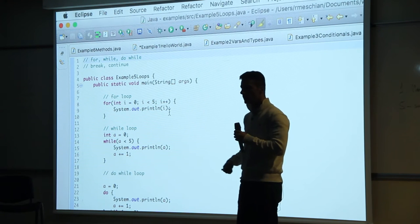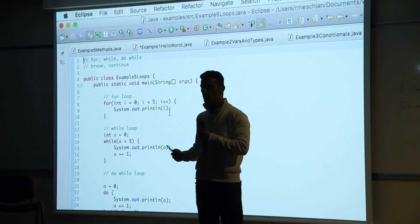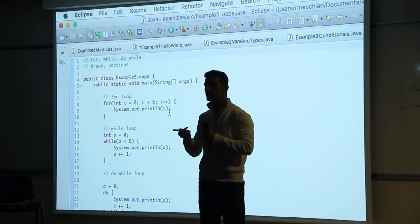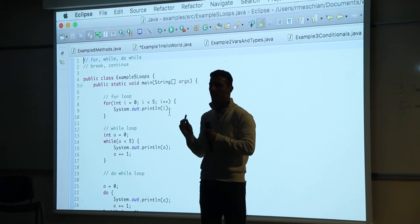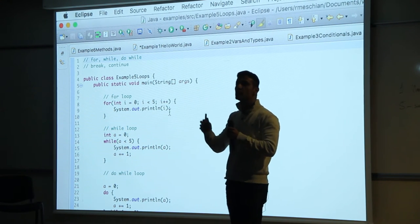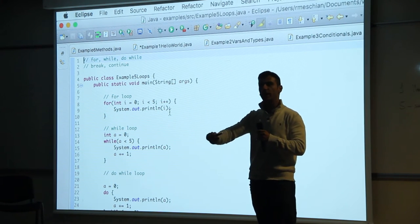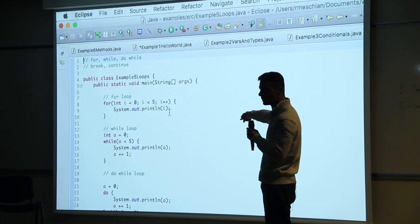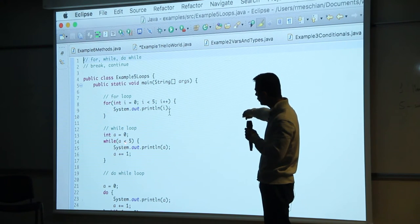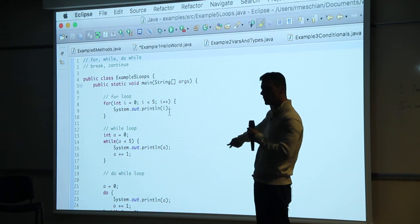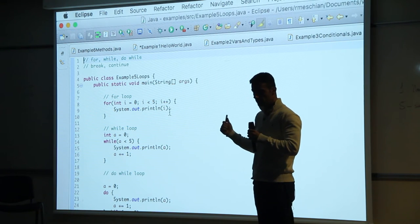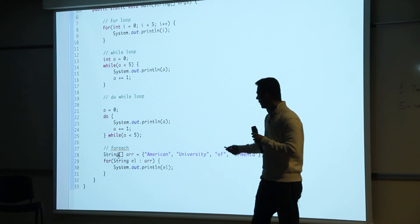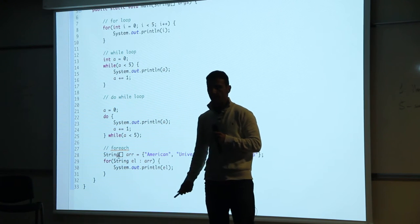Do-while: in a while loop, it checks the condition first and only runs the code if it's true. In a do-while, it executes the code at least once, then checks the condition — if true, it runs again. So in a while you check then run; in a do-while you run then check.